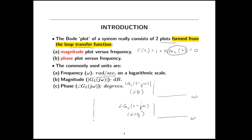One way to interpret the Bode plot is from your background in root locus. In the complex plane, one of the things we're very interested in is where the root locus crosses the imaginary axis — it tells us about stability. The Bode plot is the evaluation of that loop transfer function's magnitude and phase for all s equal j omega, that is, for all points on the imaginary axis. It gives us information about the loop transfer function's behavior exactly on the imaginary axis.